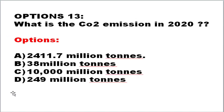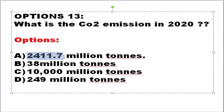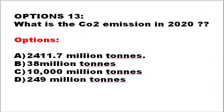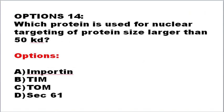The next question asks about CO2 emission with respect to the year 2020. This type of question requires you to refer to the internet or newspapers and collect information about CO2 emissions, greenhouse gases, and global warming. The correct answer is that 2004.11 million tons (or 11.17 million tons) of CO2 was emitted in 2020. The next question asks which protein is used for nuclear targeting — again, for proteins larger than 50 kilodaltons.